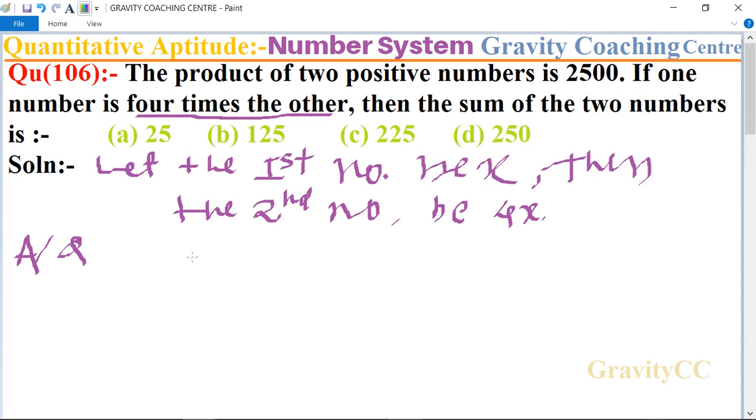is x × 4x = 2500. So 4x² = 2500. Cancel by 4: x² = 625. Since 625 is the square of 25, therefore x = 25.